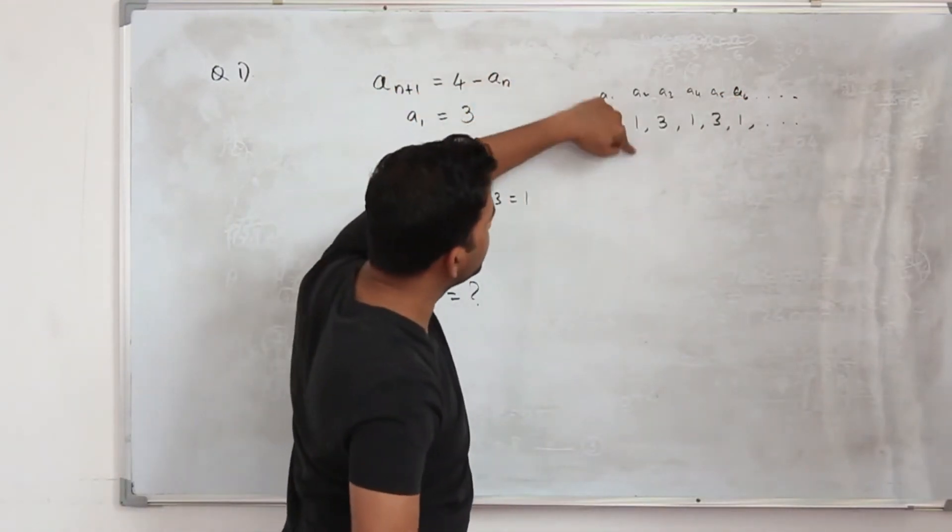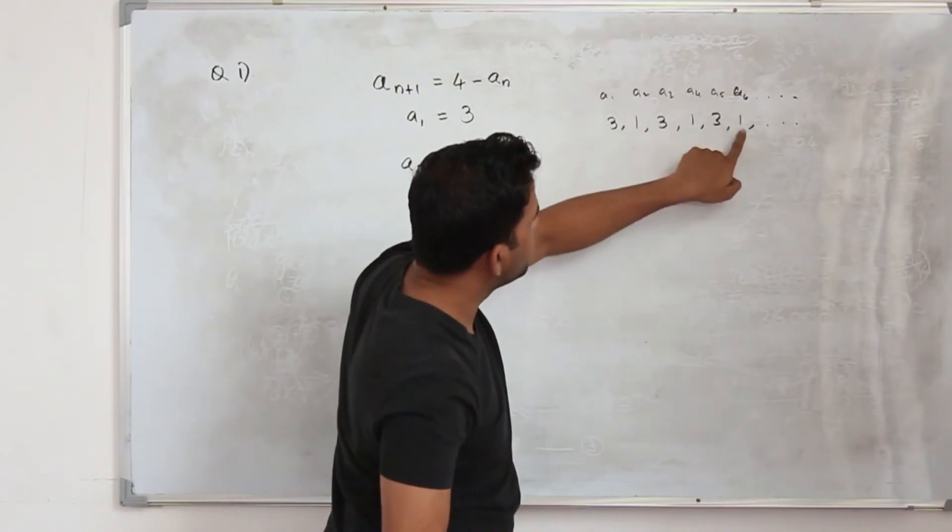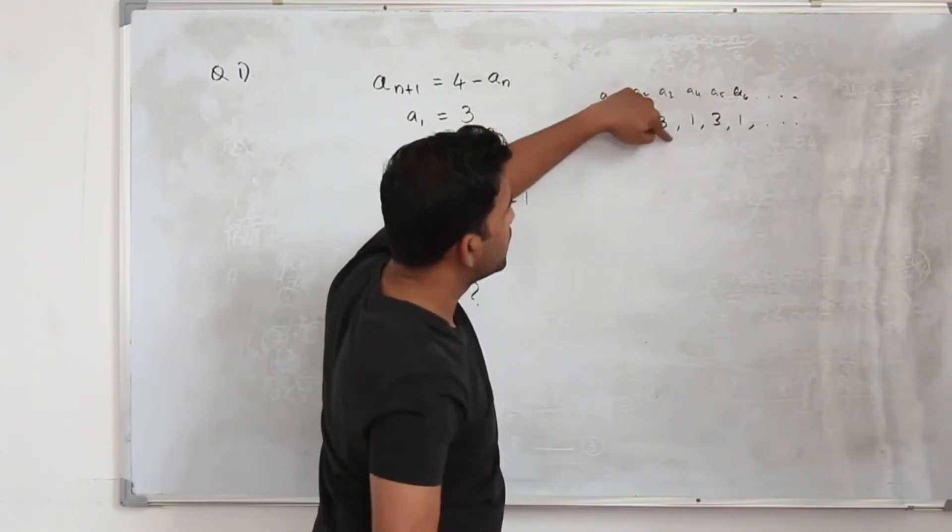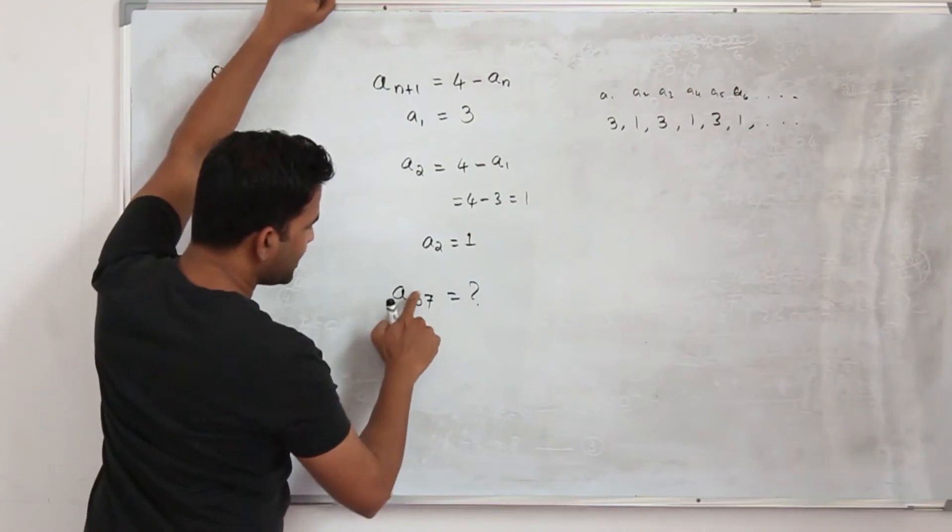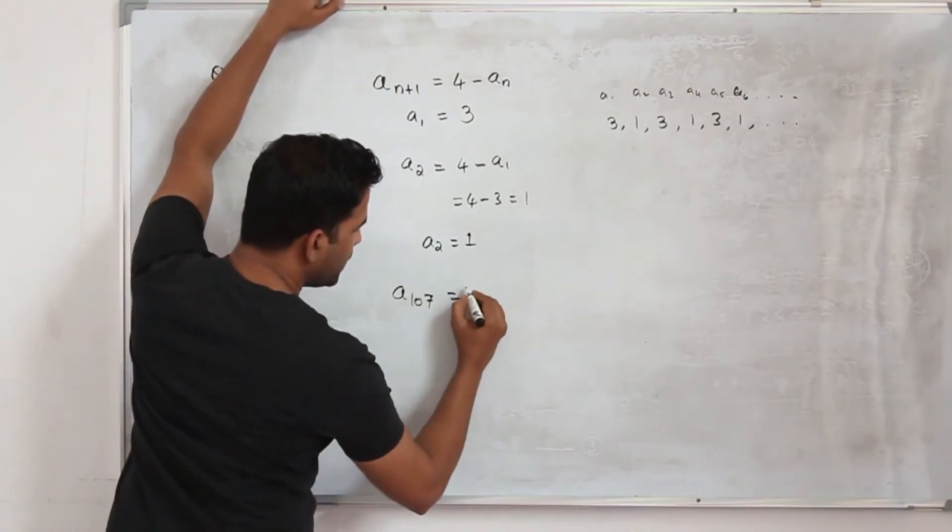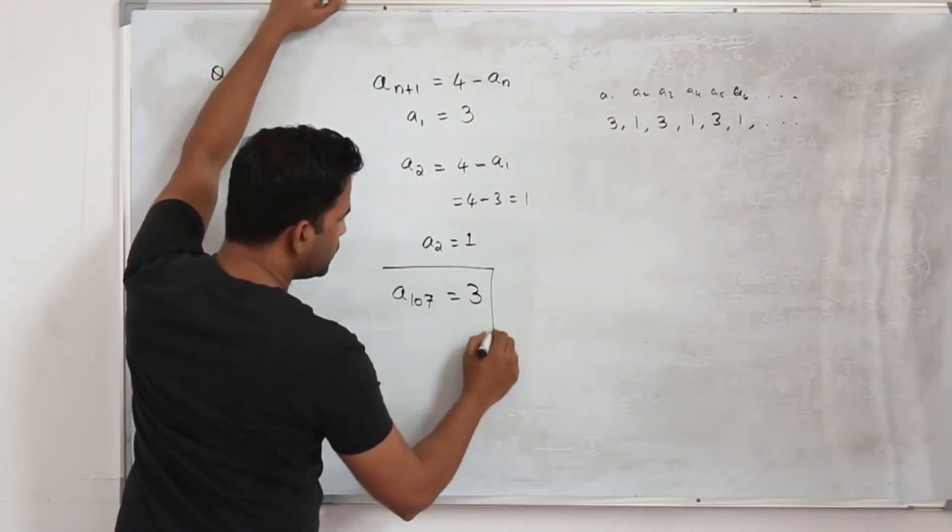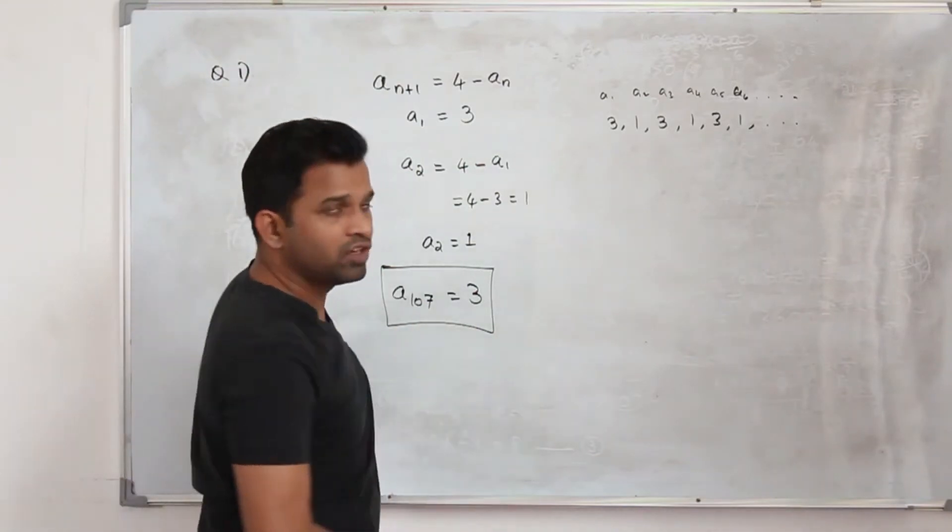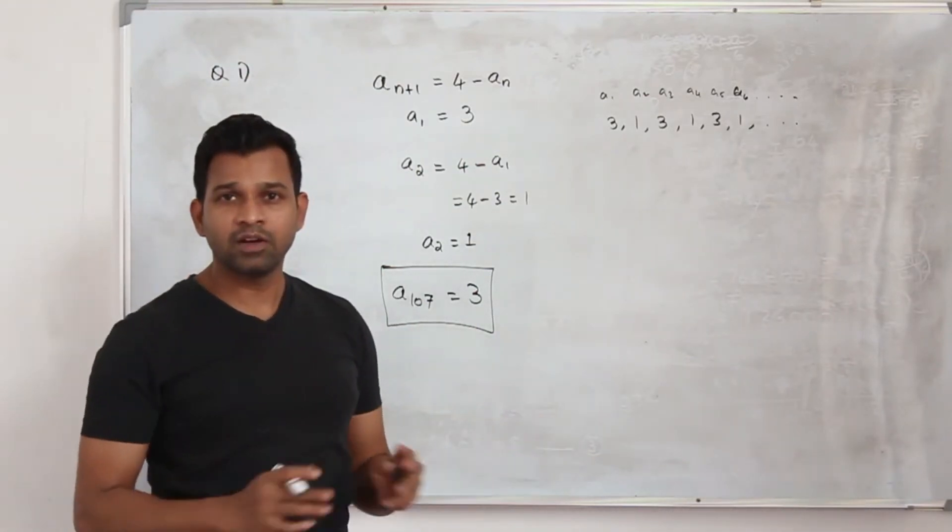So all the even terms—2, 4, 6—are 1. Odd terms are 3. So when they say 107, that's an odd number, so you can straight away write your a₁₀₇ will be 3. You don't need to do any calculation at all.